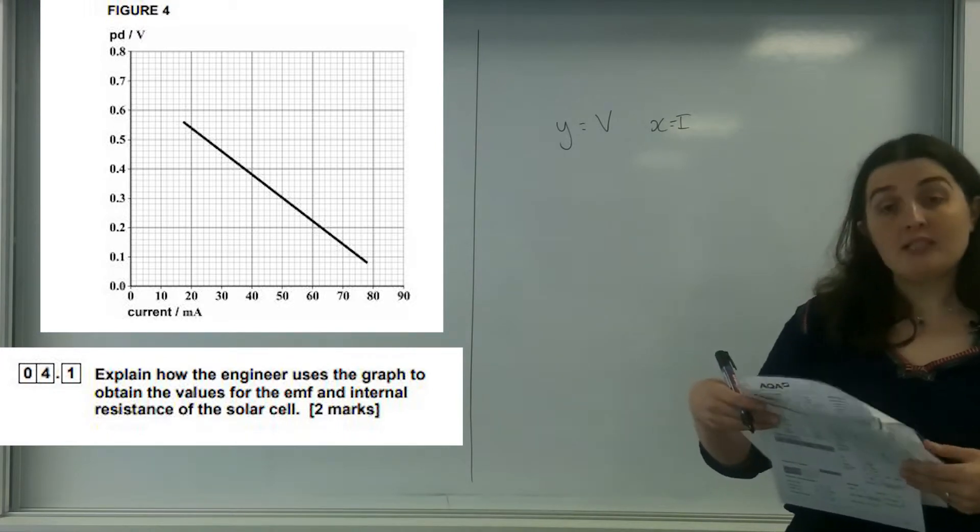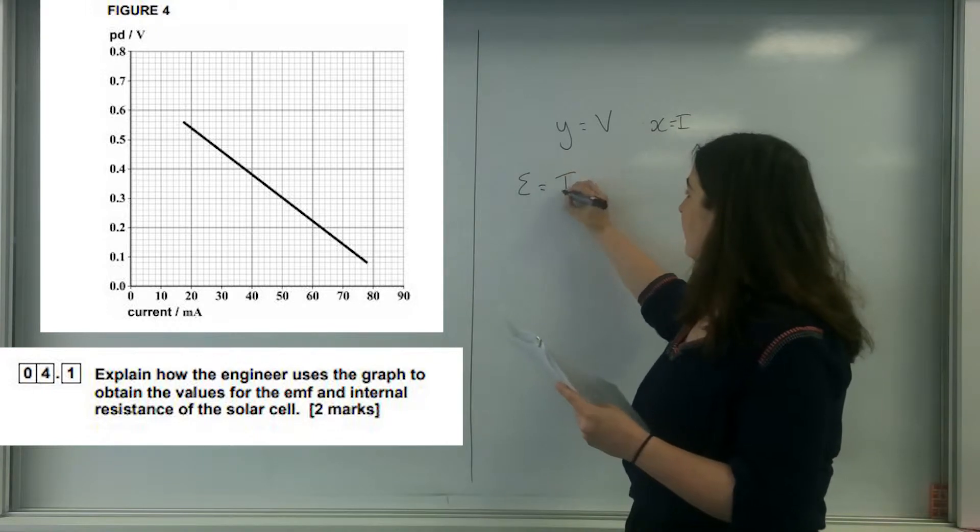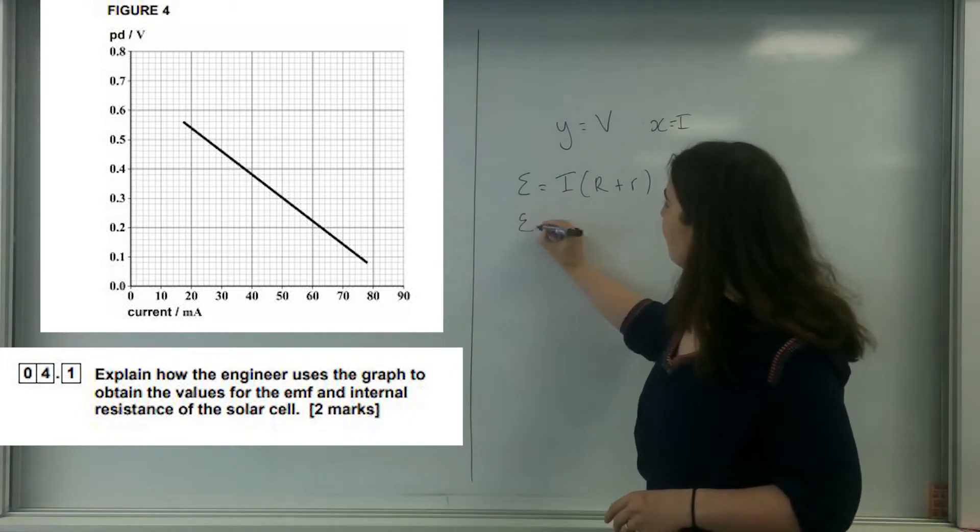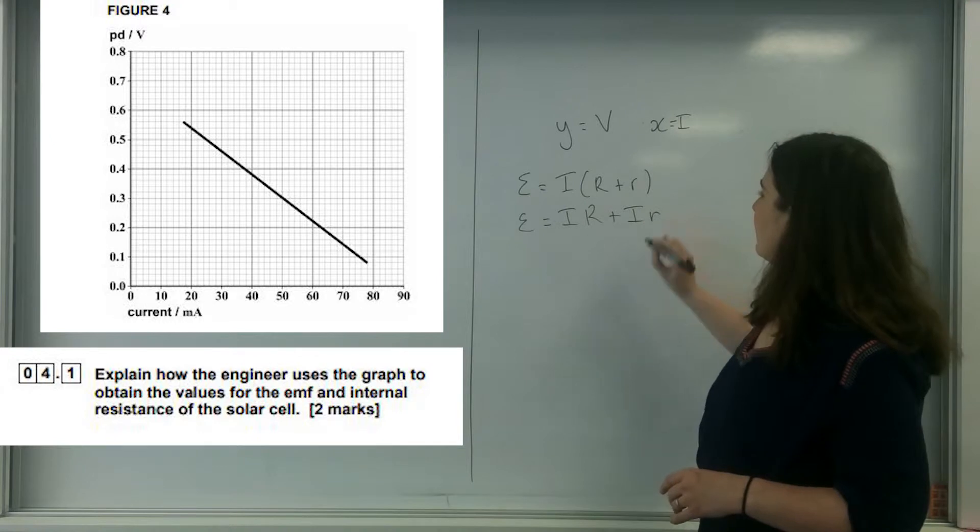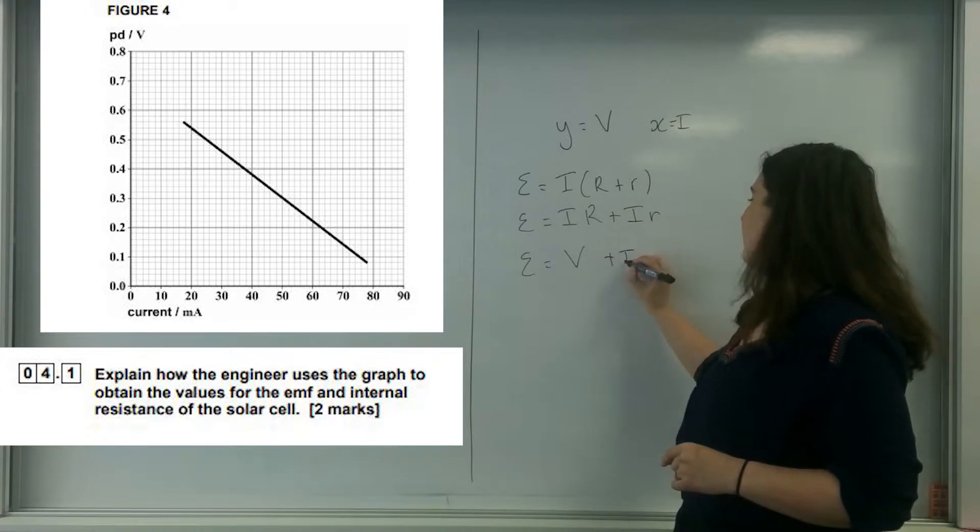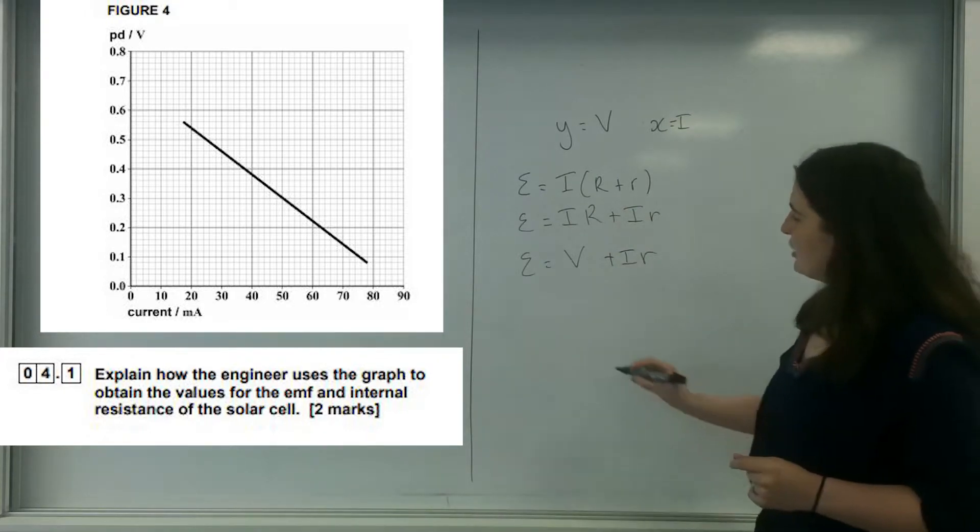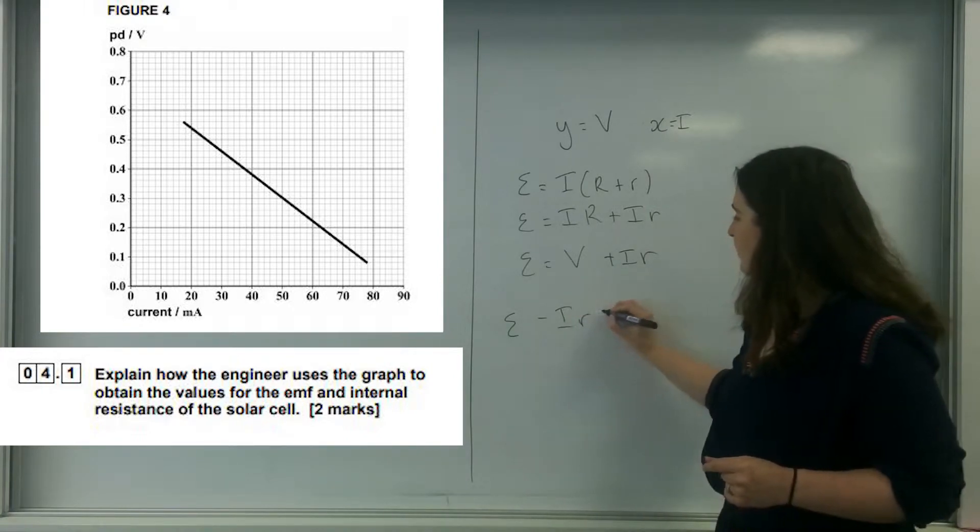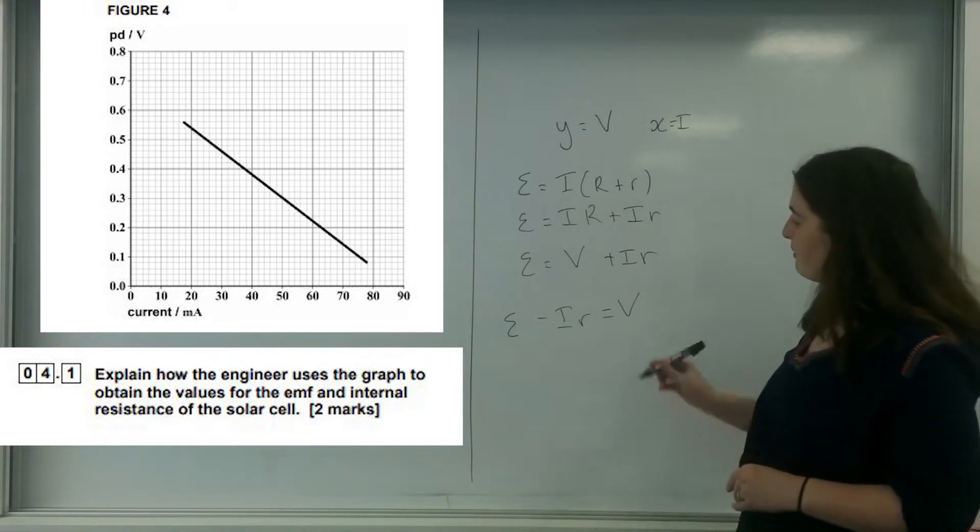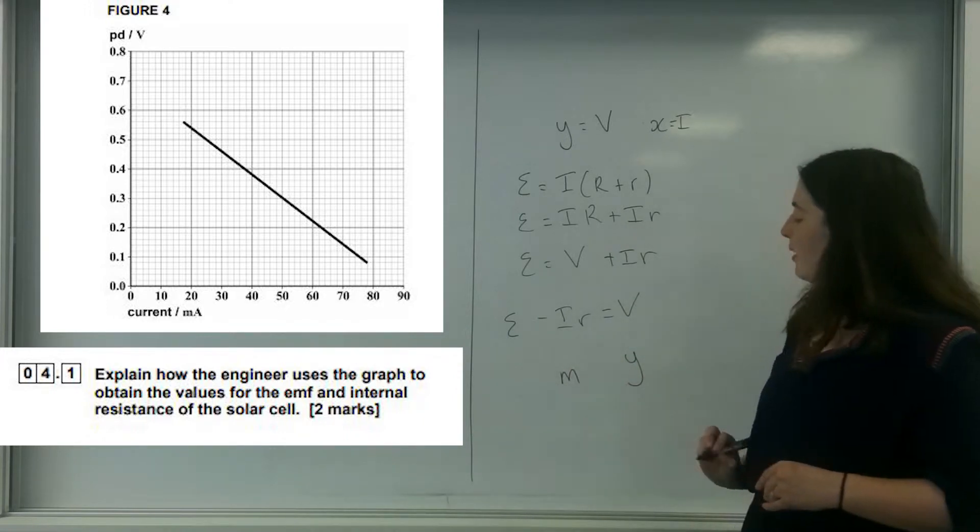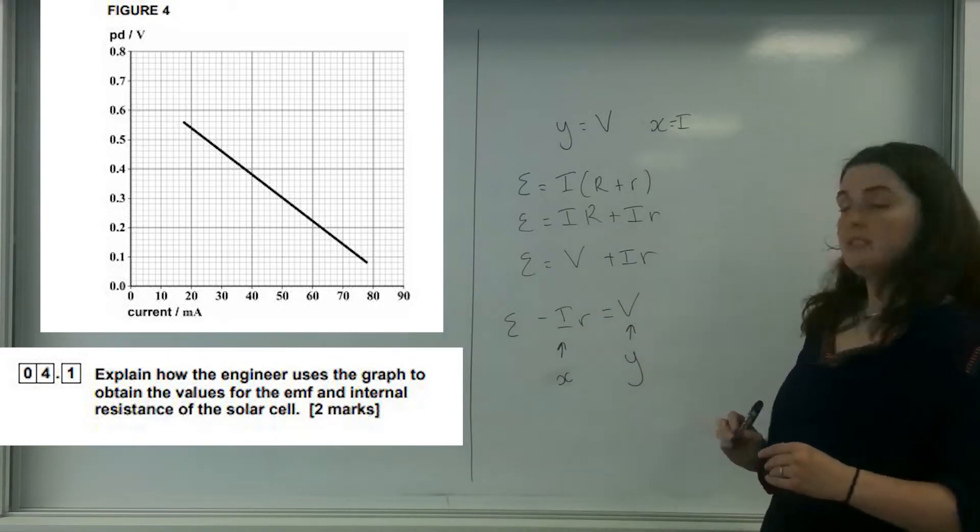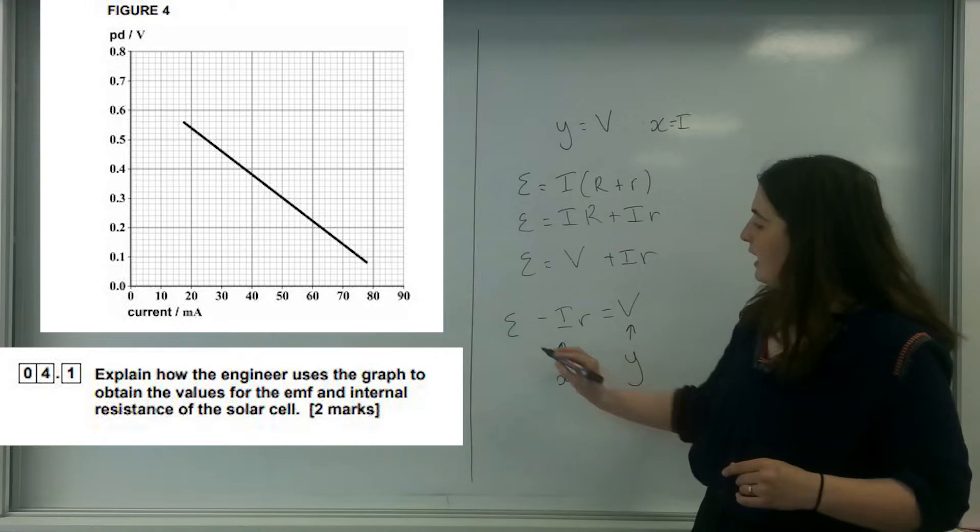Which brings us to the formula in your data sheet for this, which is in electricity: EMF equals IR plus Ir. If I rearrange it, I've got EMF minus Ir equals V. It's a straight line graph, so I'm going to force it to be y equals mx plus c. This is on my y-axis, this is on my x-axis. This means that this here is my m and this is my c.